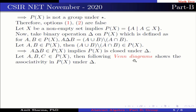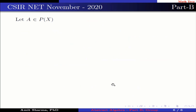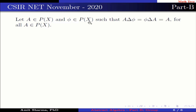The following Venn diagram shows associativity in P(X) under delta. The first Venn diagram is for (A delta B) delta C and the second is for A delta (B delta C). We can easily check that both are equal, confirming associativity. Also, for all A belonging to P(X), A delta empty set equals empty set delta A equals A, for all A belonging to P(X). Here the empty set is the identity in P(X) under delta.